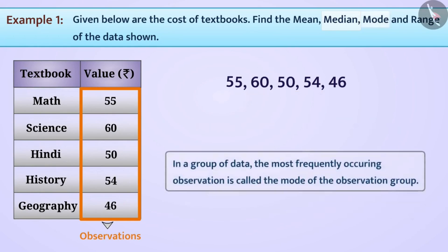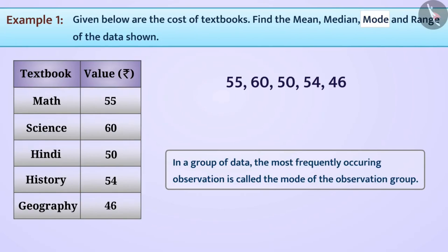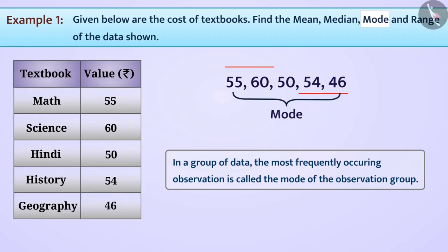Also, we have learned that in a group of data, the most frequently occurring observation is called the mode. Looking back at the data provided for the costs of the textbooks, you may see that each observation has occurred at most once. So yes, all observations are modes.